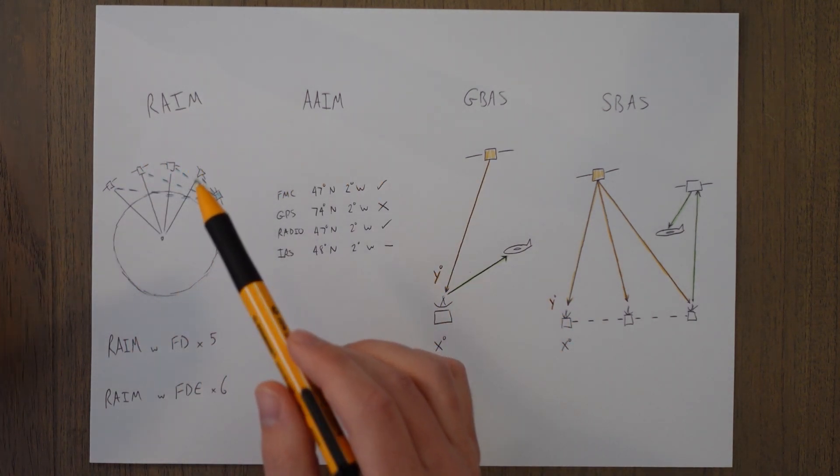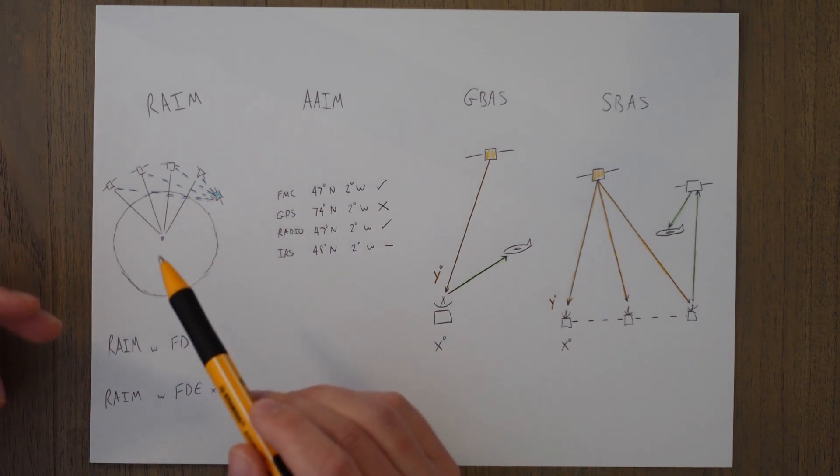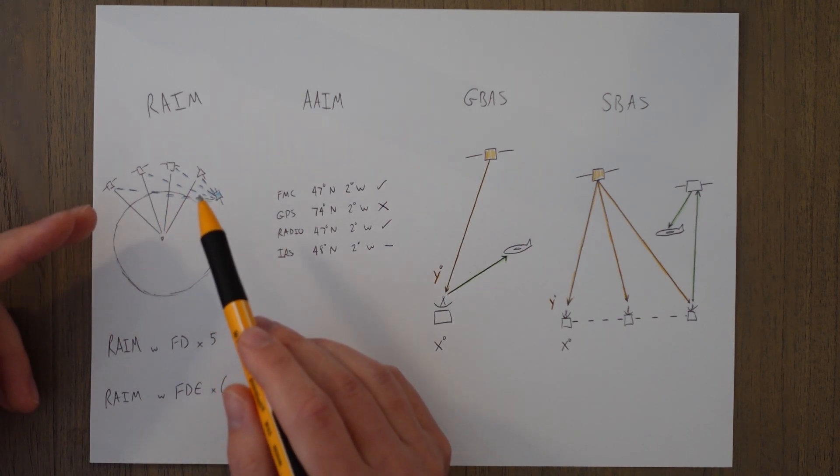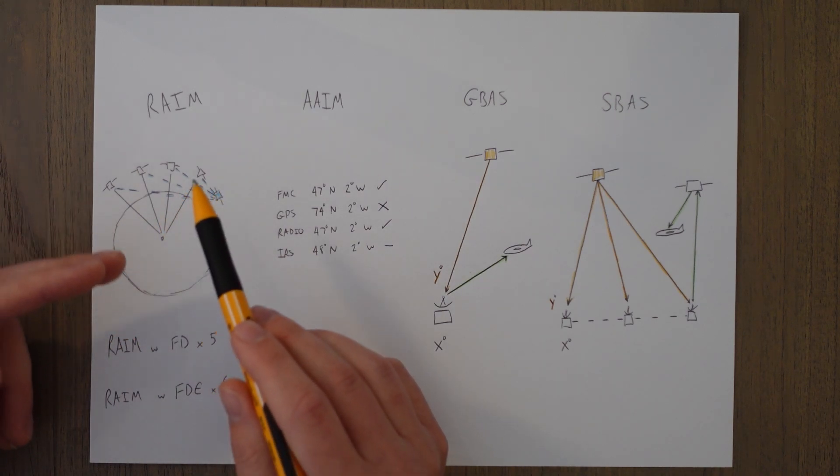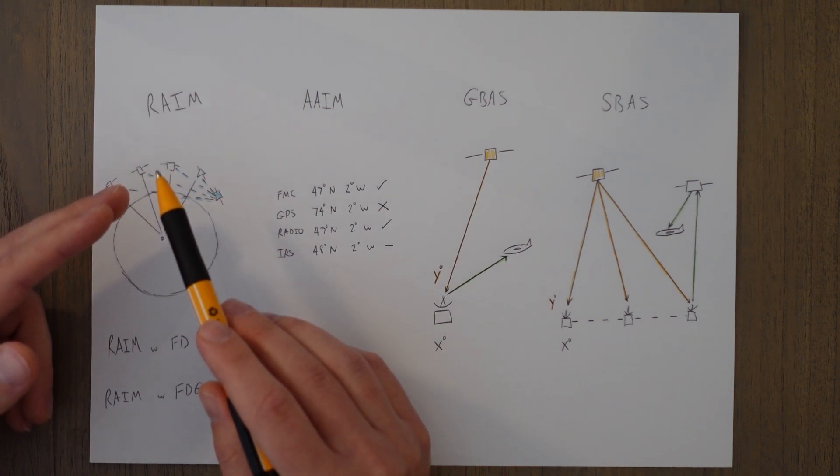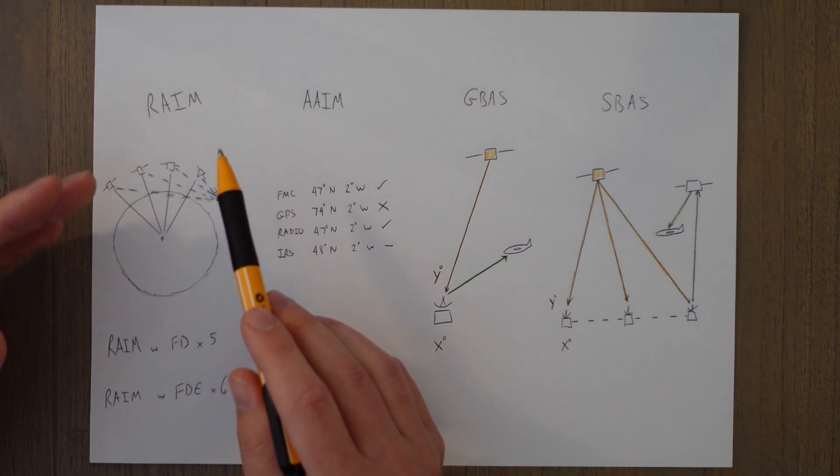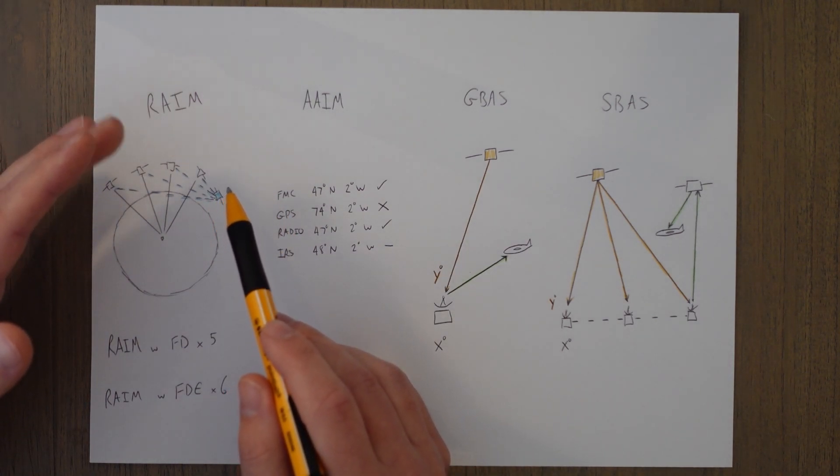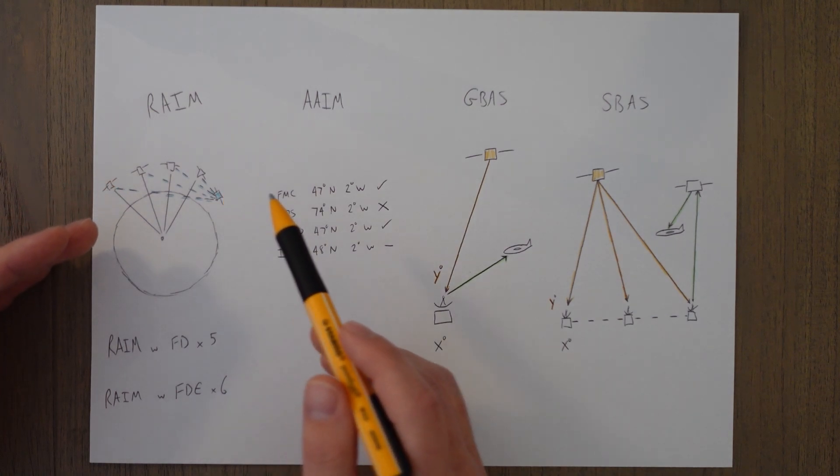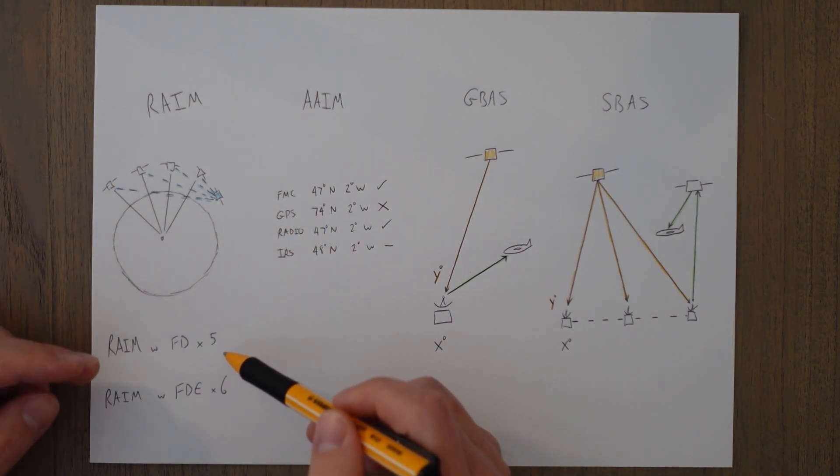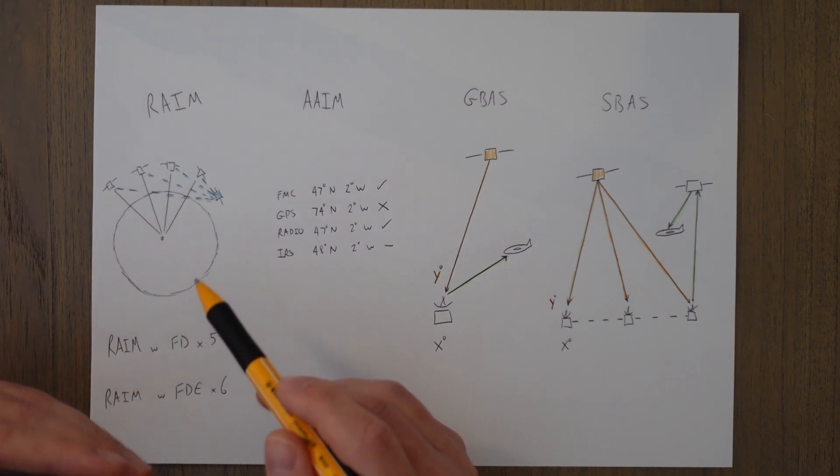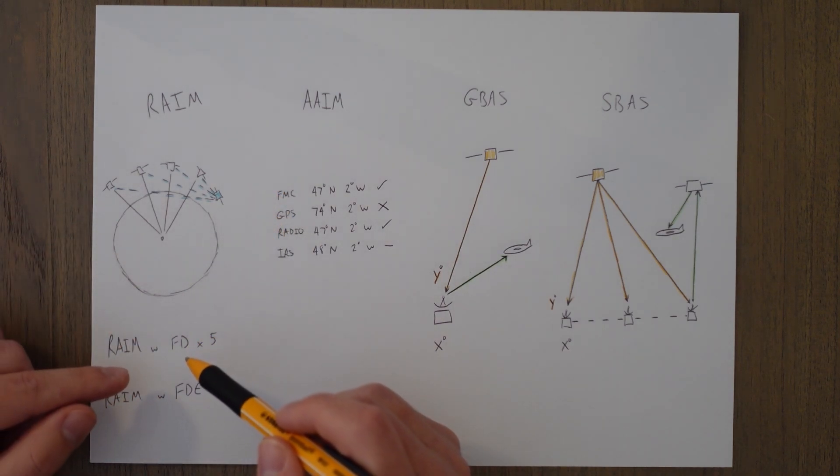You get RAIM which is when a fifth satellite monitors and substitutes itself in every so often to make sure that the satellites are giving good information. If the position deviates wildly then through multiple iterations the incorrect satellite can be eliminated and if you just want to eliminate it you need five satellites but if you want to eliminate the dodgy satellite and maintain RAIM coverage you need six satellites. For maintaining RAIM coverage we call it fault detection and exclusion whereas just replacing the system and losing the RAIM functionality we just call it fault detection.